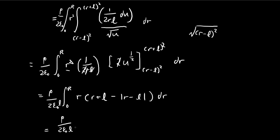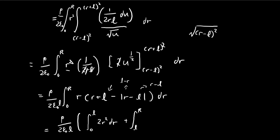To evaluate this integral we need to break the bounds into two cases. For the first case, integrating from 0 to L, r is smaller than L, so the absolute value |r minus L| becomes L minus r. Substituting back gives minus L plus r, yielding 2r squared. For the second case, integrating from L to R, r is larger than L, so |r minus L| is just r minus L. Combining with the expression gives r times 2L dr.